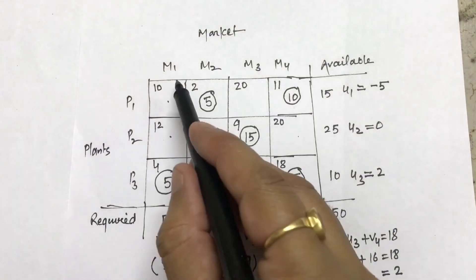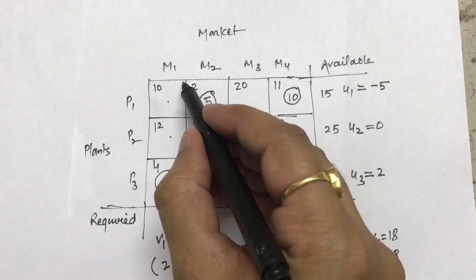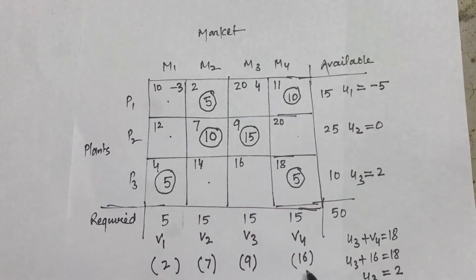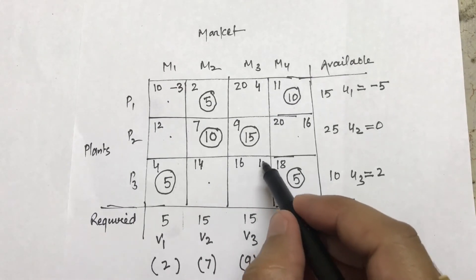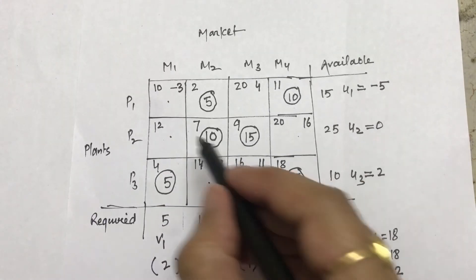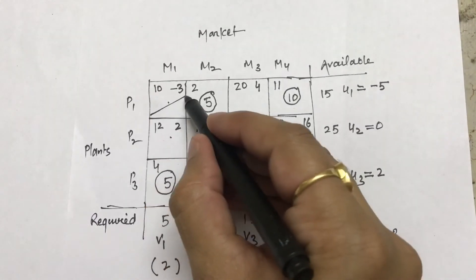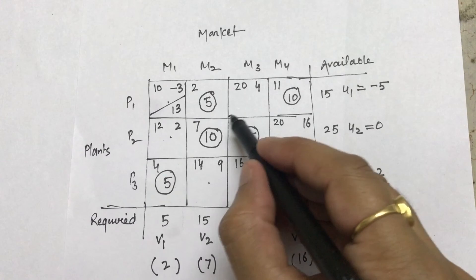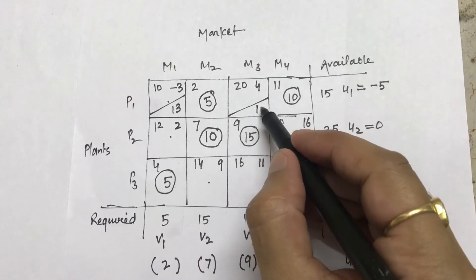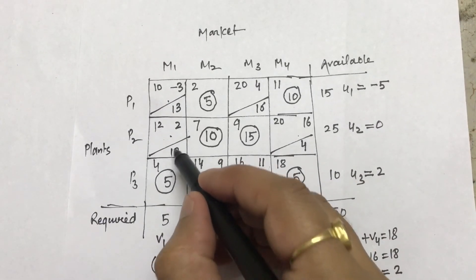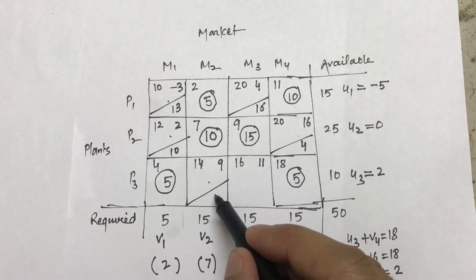Once again, it will be 2 plus minus 5, it is going to be minus 3 here. 9 plus minus 5, which is going to be 4. 16 plus 0, which is going to be 16. 9 plus 2 is 11. 7 plus 2 is 9. 2 plus 0 is 2. And this is going to be 10 minus minus 3, 10 plus 3 is 13. Then it is 20 minus 4, which is 16. 20 minus 16, which is 4. 12 minus 2 is 10. 14 minus 9 is 5.